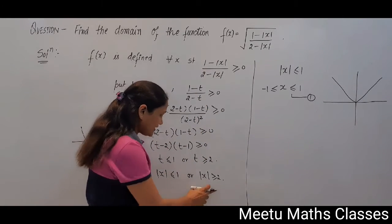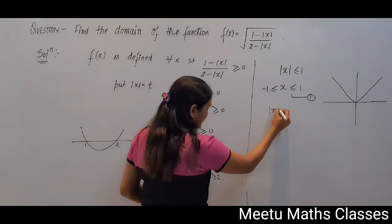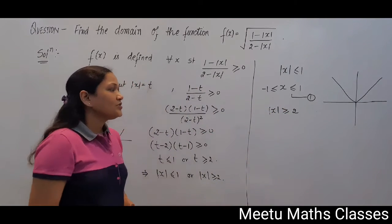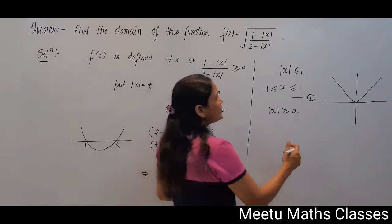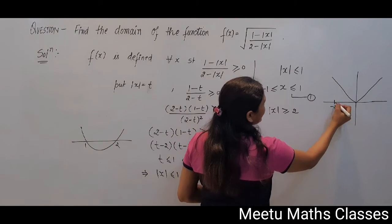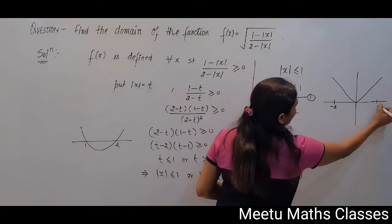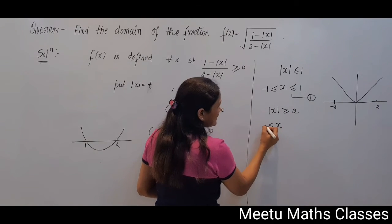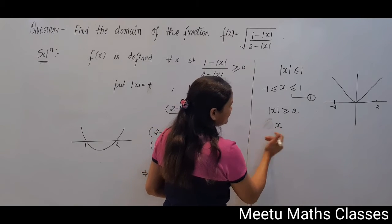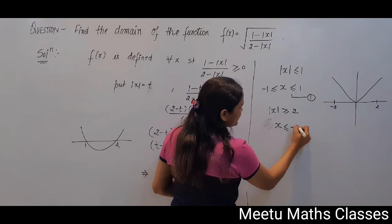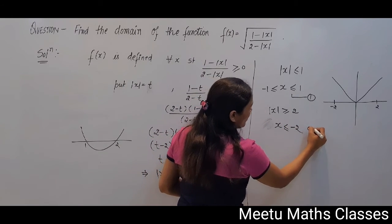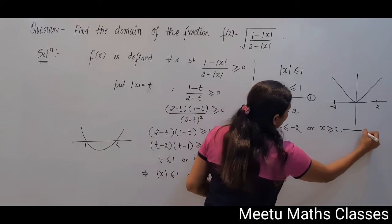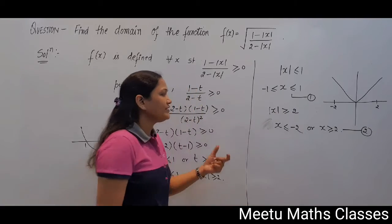Also there is another set of points which comes in the domain, that is |x| ≥ 2. So |x| will be greater than or equal to 2 when x ≤ -2 or when x ≥ 2. These are the second set of points in the domain.